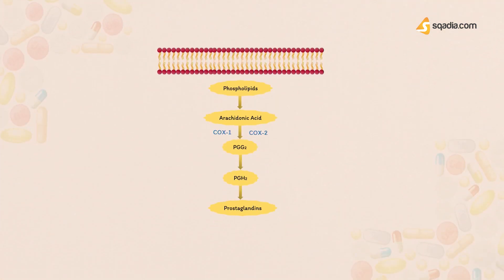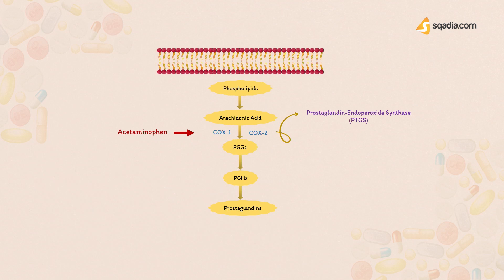Cyclooxygenase is also known as prostaglandin endoperoxide synthase, or PTGS. It is an enzyme responsible for the formation of prostanoids, including thromboxane and prostaglandins, which originate from arachidonic acid — a polyunsaturated fatty acid present in the phospholipids of cell membranes. Acetaminophen inhibits the two isoforms of cyclooxygenase — COX-1 and COX-2 — that are involved in prostaglandin synthesis. Since prostaglandins are responsible for eliciting pain sensations, this inhibition explains the analgesic activity of acetaminophen.